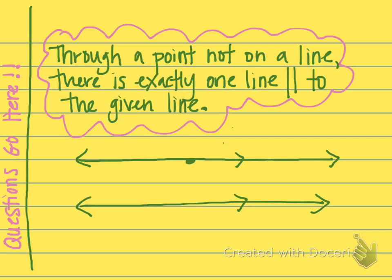Now, there are other types of geometries called non-Euclidean that can disprove this — they can show you that there are more than one line through a point parallel to the given line, or that there are no lines. If you'd like more information on that, just let me know.